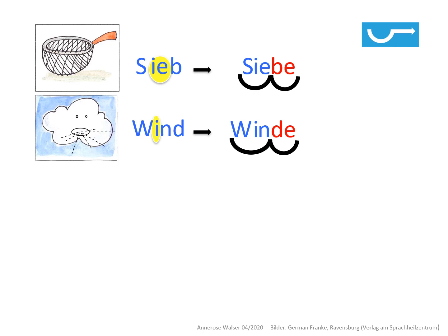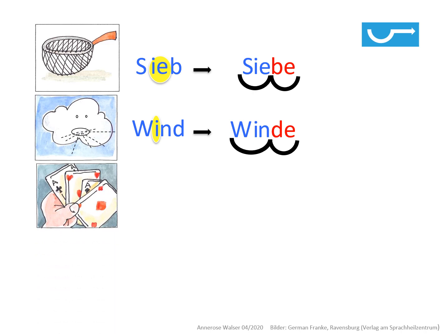Ich habe es also mit der Verlängerungsprobe kontrolliert. Spiel – kann ich einmal klatschen? Eine Silbe. Ich verlängere: Spiele. Nach der Lücke für das I oder das IE ist die erste Silbe zu Ende. Das heißt, ich setze das IE ein. Und genauso wie das Wort in der Mehrzahl, ist auch das Wort Spiel in der Einzahl mit einem IE.